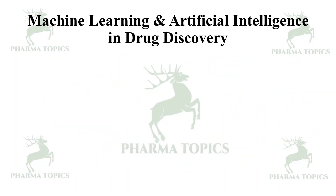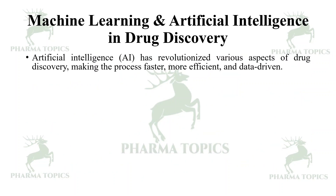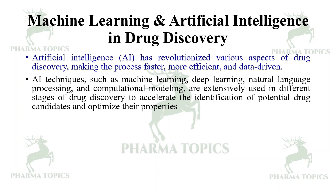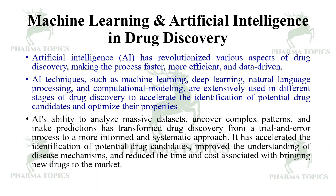Machine learning and artificial intelligence have revolutionized aspects of drug discovery, making the process faster, more efficient, and data-driven. AI techniques help in the identification of potential drug candidates and optimize their properties to accelerate drug discovery. AI's ability to analyze massive datasets, uncover complex patterns, and make predictions has transformed drug discovery from a trial-and-error process to a more informed and systematic approach.